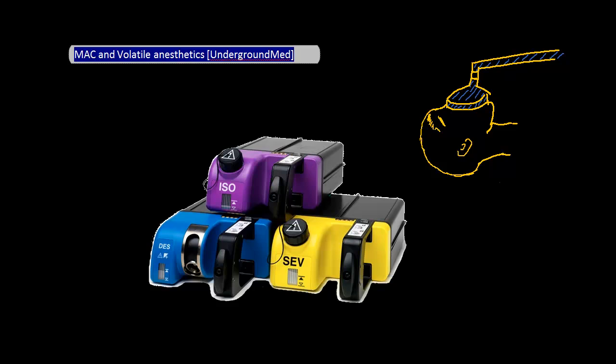When you step into the OR and look at the anesthesia machines, you will notice that there are three color-coded tanks. These contain the volatile gases.